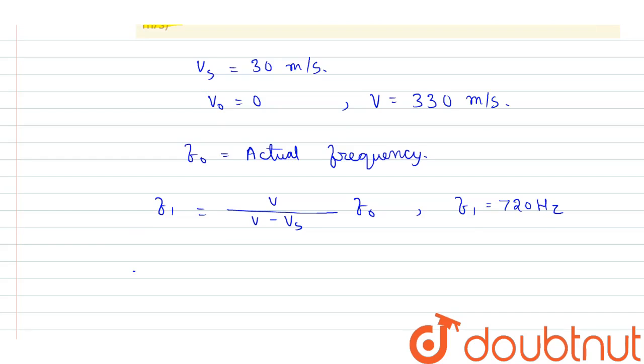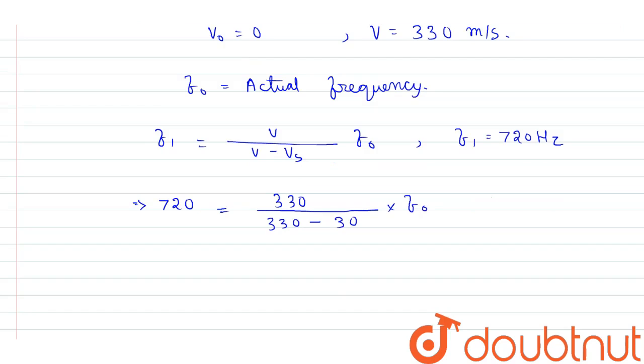Therefore, F1 value is 720 and V value is 330 divided by 330 minus 30 into f0. From here we get the value of f0. Therefore f0 equals 720 into 300 divided by 330 hertz.